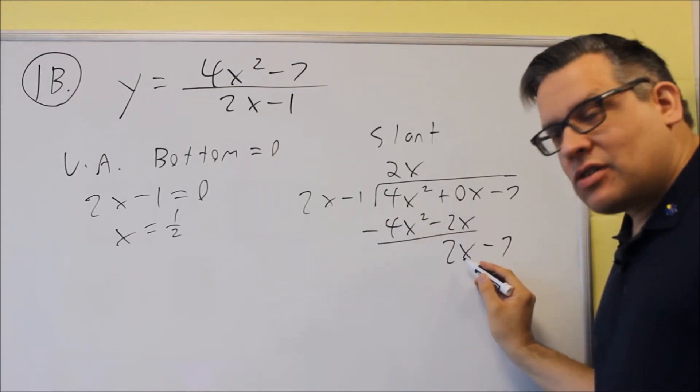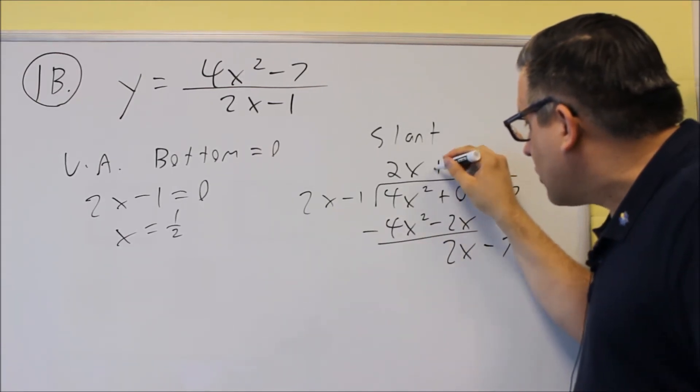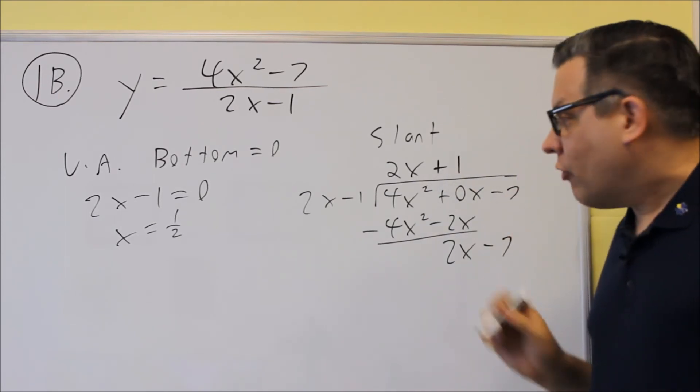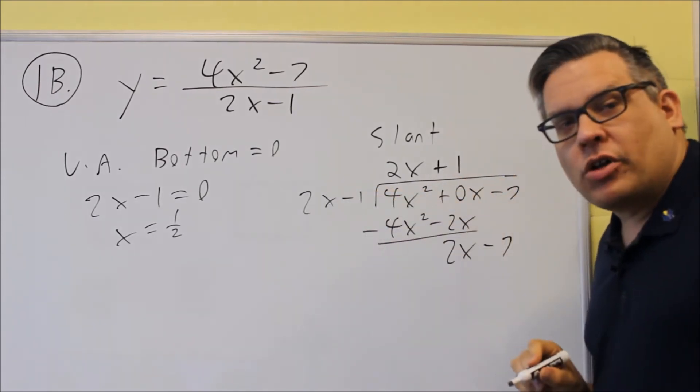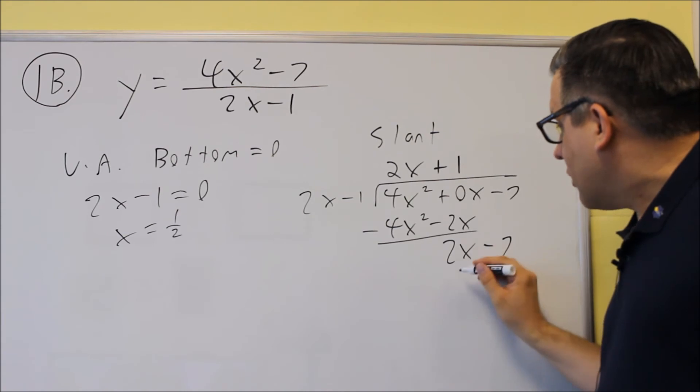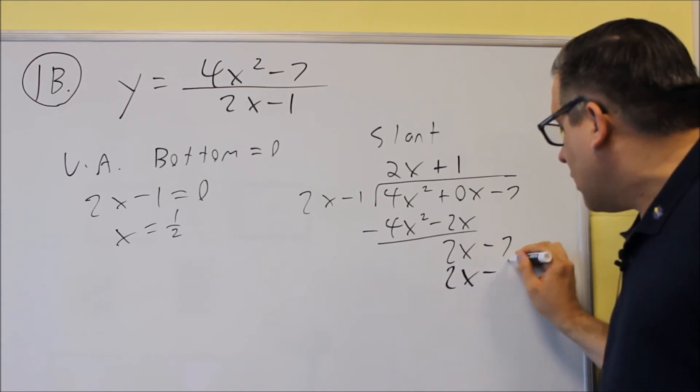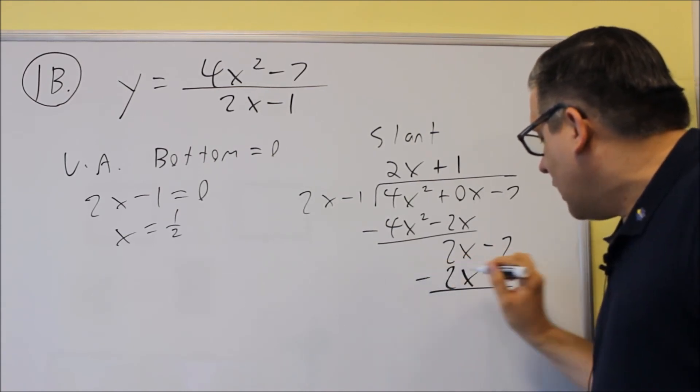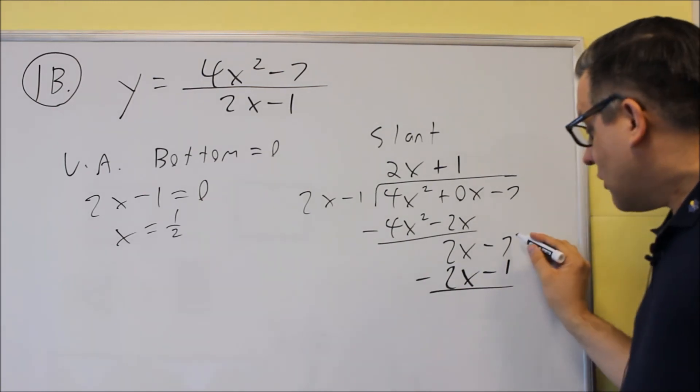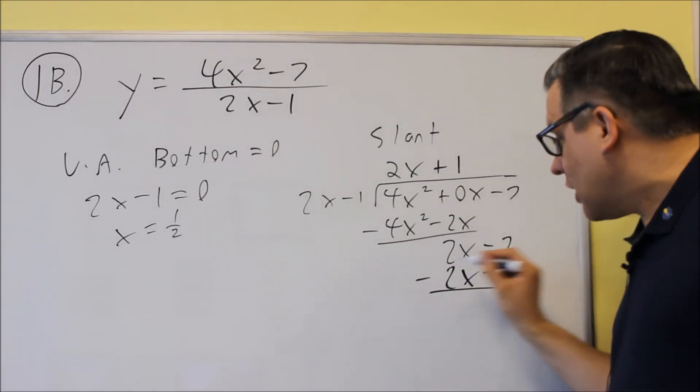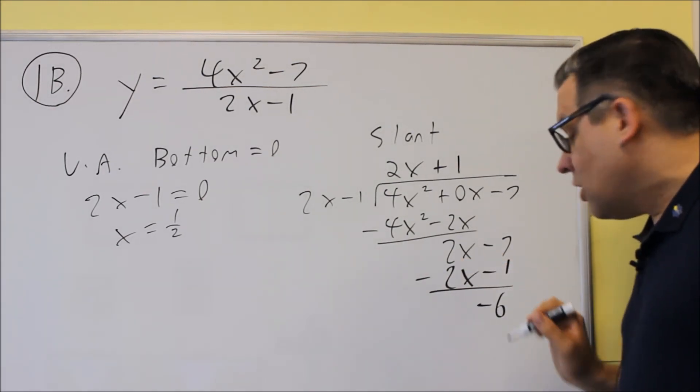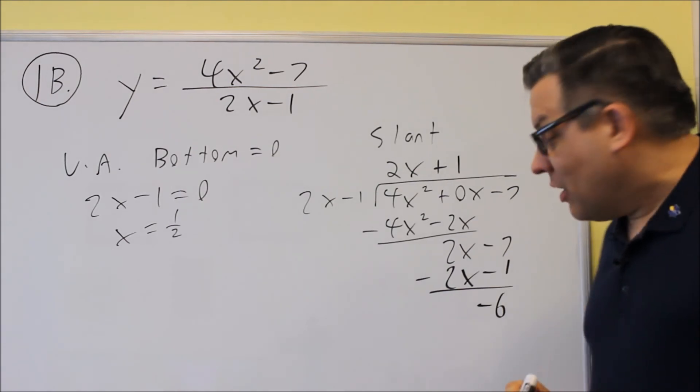So 2x, and there's a 2x there, you'll need a 1. So we're going to put a plus 1 over there, and then that's going to be multiplied by what you have outside there. So you're going to get 2x minus 1. And then we're going to subtract it. You have negative 7 minus a negative 1. So negative 7 plus 1. And you end up with a remainder of negative 6.